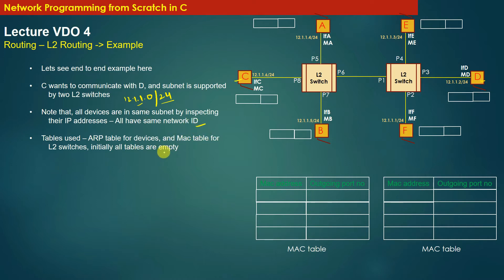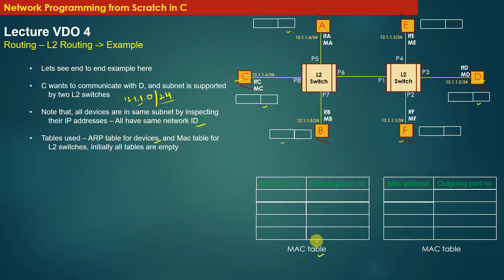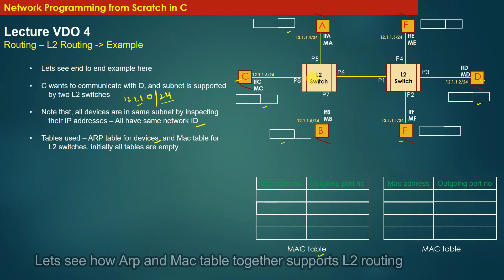The tables used in this diagram are: the ARP table for devices — that is, the host machines A, B, E, F, C, and D — and the MAC table for the two L2 switches. We have an empty ARP table for each host machine and a MAC table corresponding to each L2 switch. Let us see how the ARP table and MAC table together support L2 routing.